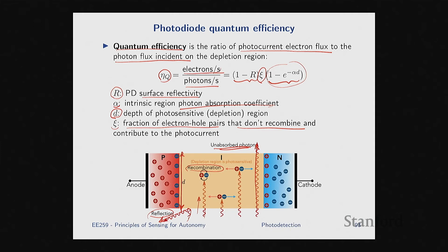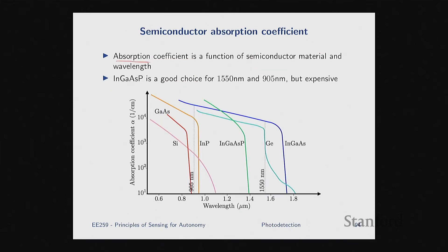The absorption coefficient α depends on the semiconductor material and wavelength. Plots of α (in cm⁻¹) vs. wavelength for different materials show which material to choose for a given LiDAR wavelength. For 1550 nm LiDAR, germanium and indium gallium arsenide (InGaAs) are good choices. For 905 nm LiDAR, other choices become available — silicon, for instance.